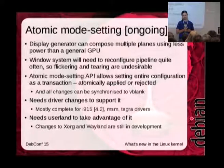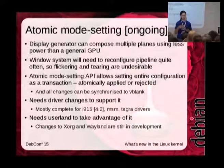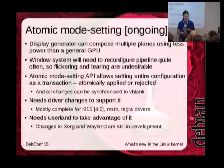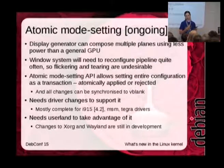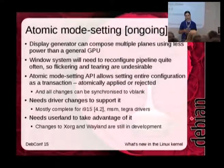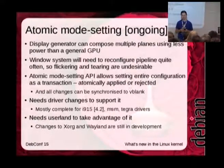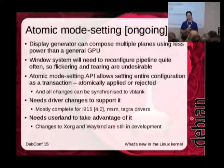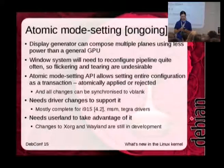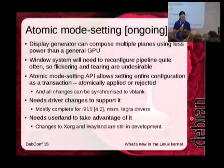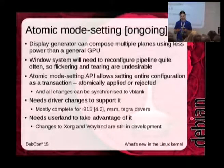Android is making much more use of composition at the display generator instead of the GPU. Android has done its own thing — it's not using KMS and doesn't support multiple pipelines at all. But you're going to see mobile devices using a normal Linux graphics stack, and you want your laptop to run longer using less power. So it would be really nice to make more use of multiple layers in X or Wayland, meaning the windowing system will need to reconfigure planes more often — and that means we really don't want flickering.